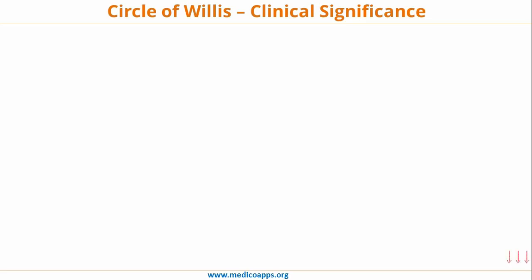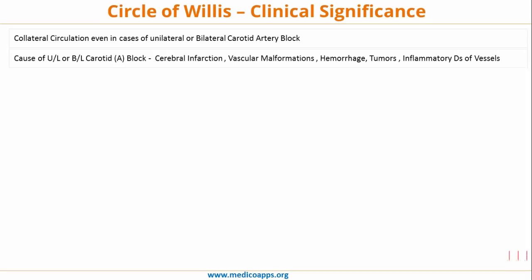Let's look at the clinical significance of the Circle of Willis. It provides collateral circulation and blood supply to very critical structures — the pituitary, hypothalamus, and optic chiasm. These structures continue receiving blood supply even if there is a unilateral or bilateral carotid artery block. Causes of such blocks include cerebral infarction, vascular malformation, hemorrhage, tumor, and inflammatory vessel disease.